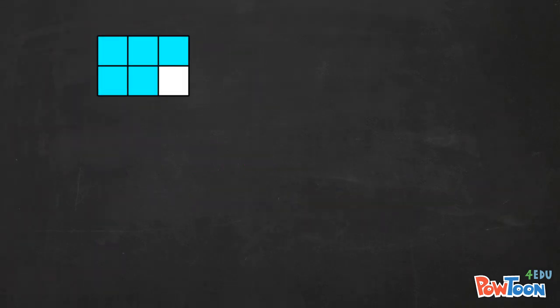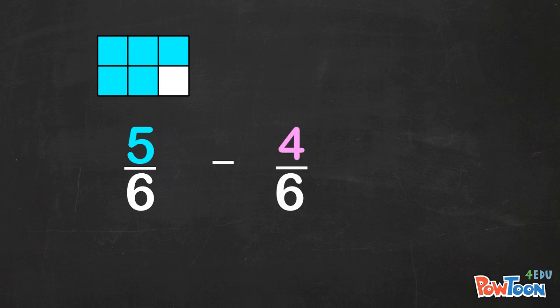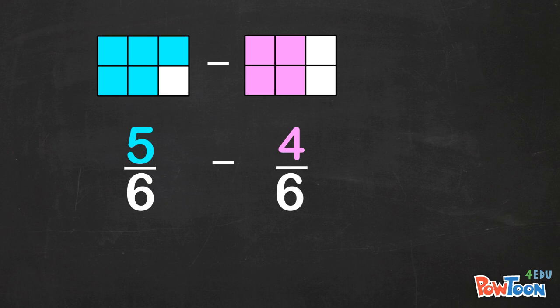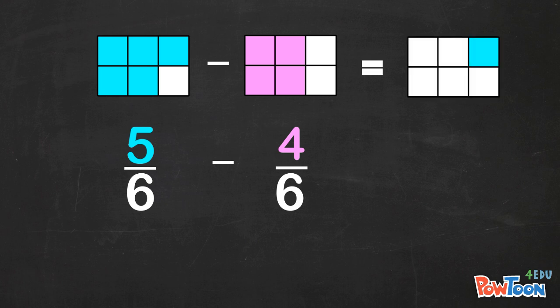This represents 5 sixths. I have to subtract 4 sixths. If I take 4 sixths away from 5 sixths, here's what's left. 1 part out of 6. 1 sixth.